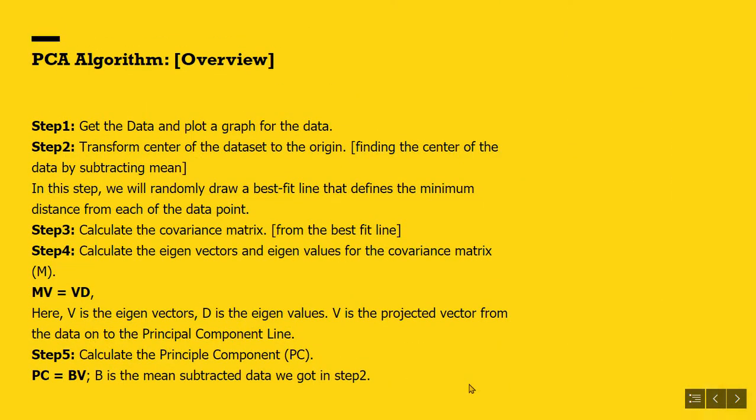PCA algorithm consists of several distinct steps. Step 1: Get the data and plot a graph for the data. Here, we will calculate the mean for all attributes, or columns, to find the center of the data by subtracting the mean from each value of the column. Step 2: Transform the data center to the origin. Now randomly draw a best fit line that defines the minimum distance from the data point.